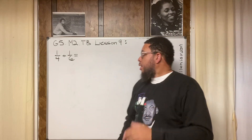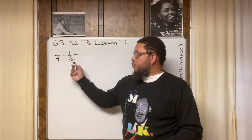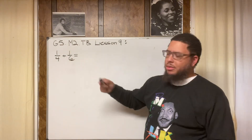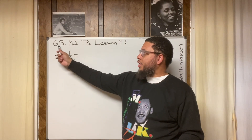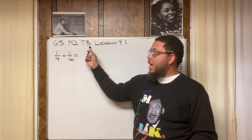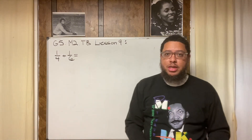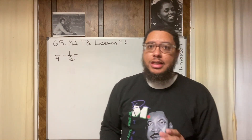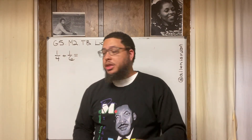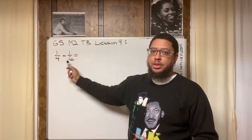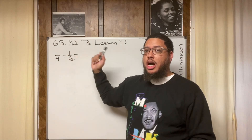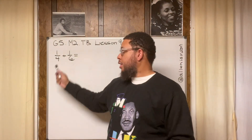All right, so check out his work. Now, one-fourth plus one-sixth. This is Eureka Squared, Grade 5, Module 2, Topic B, Lesson 9 — the last lesson within Topic B. Then we're going into Topic C. The title of this lesson is: add and subtract fractions with unrelated units. These are unrelated units because four is not a factor of six and six is not a multiple of four.